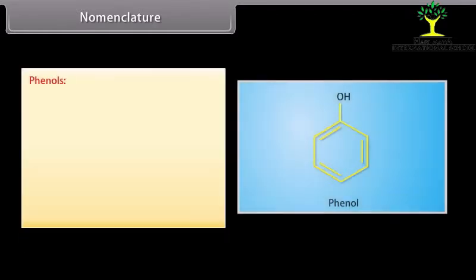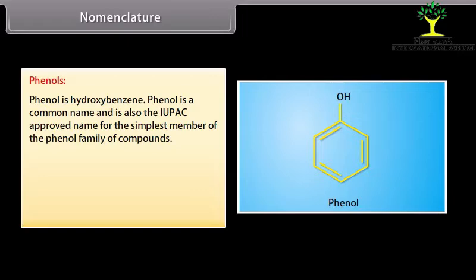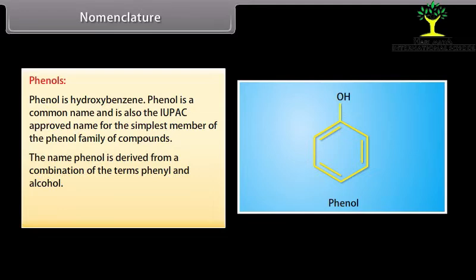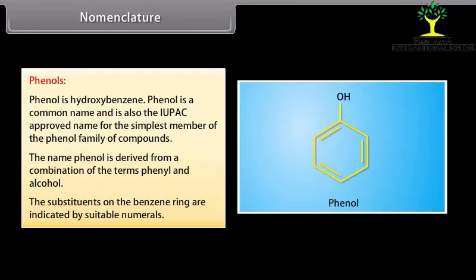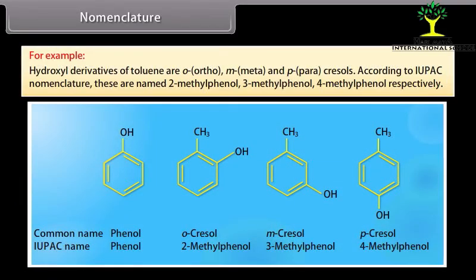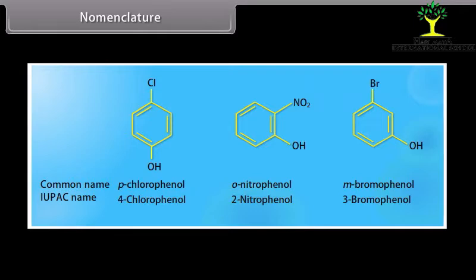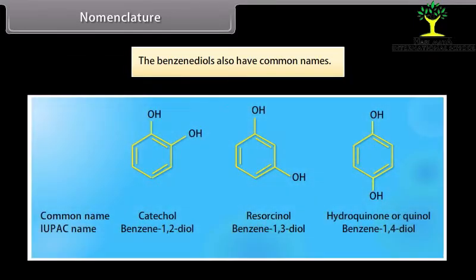Nomenclature of phenols. Phenol is hydroxybenzene. Phenol is a common name and is also the IUPAC approved name for the simplest member of the phenol family. The name phenol is derived from a combination of the terms phenyl and alcohol. Substituents on the benzene ring are indicated by suitable numbers. For example, hydroxyl derivatives of toluene are ortho, meta and para cresols, named 2-methylphenol, 3-methylphenol, and 4-methylphenol respectively. Benzene diols also have common names.